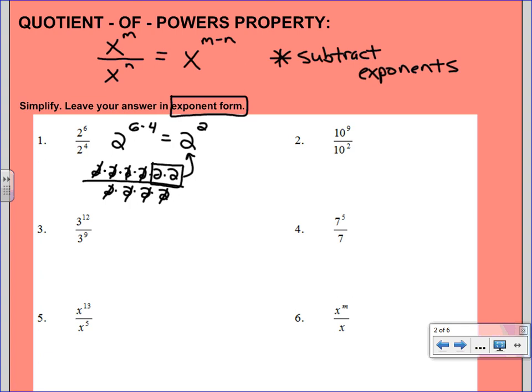So here we're going to do 10^(9-2), which will give us 10^7. And the next one, our bases are the same, so we're going to go ahead and subtract those exponents. So 3^(12-9), which is 3^3.